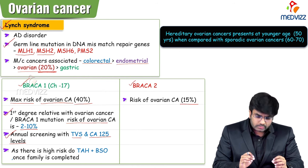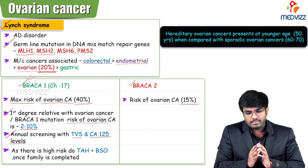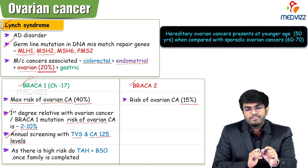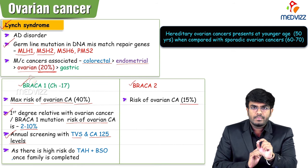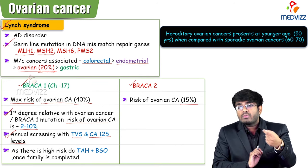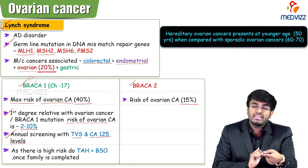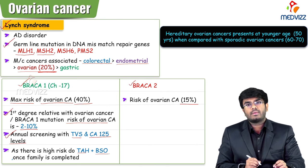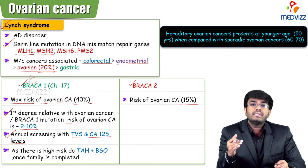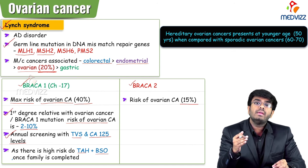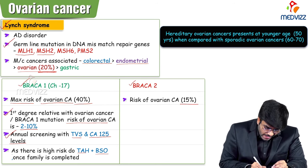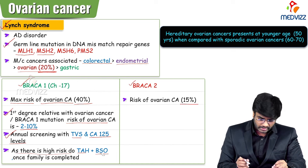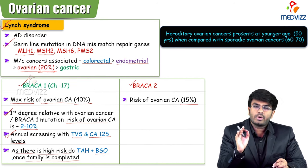For a female with BRCA1 gene mutation carrying a 40% risk of ovarian cancer, I would advise: once you complete your family, proceed with total abdominal hysterectomy with bilateral salpingo-oophorectomy. It is better to remove her ovaries because of the high risk of developing ovarian cancer. So total abdominal hysterectomy with bilateral salpingo-oophorectomy is recommended once her family is completed.